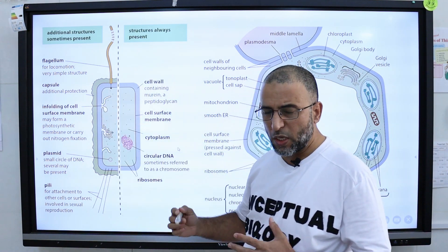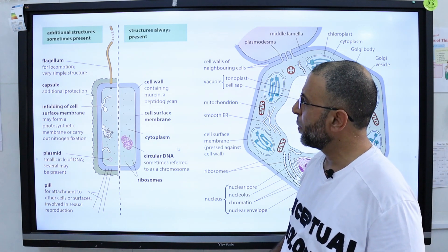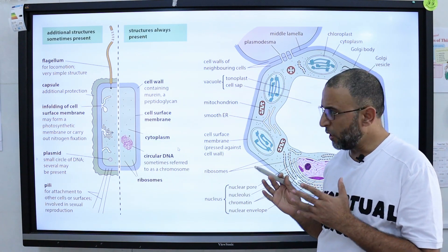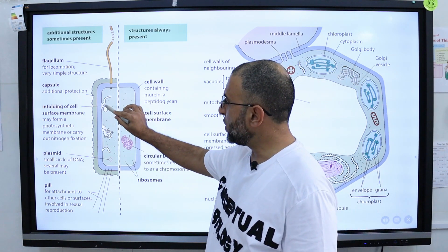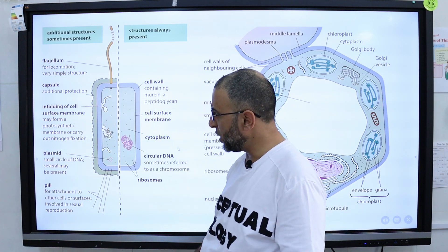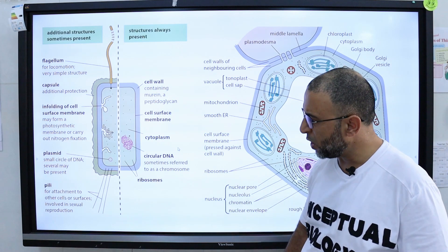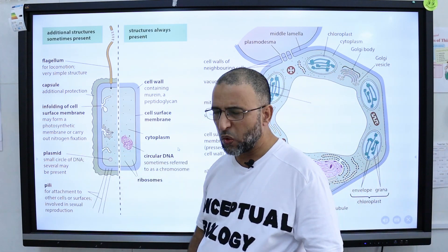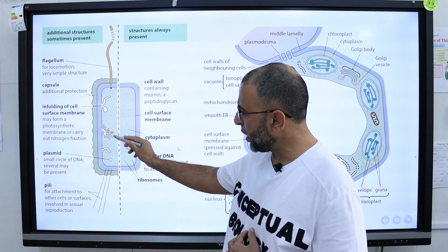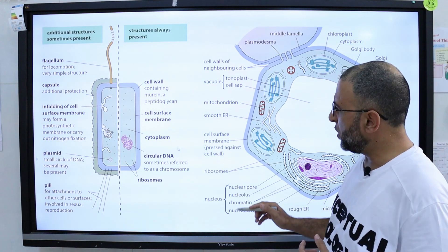Additional structures sometimes present in prokaryotic cells include a flagellum, used for locomotion. In some bacteria, a capsule is present outside the cell wall for additional protection. Sometimes the cell membrane is infolded, and these infoldings are used in photosynthesis as well as nitrogen fixation. Extra chromosomal rings called plasmids are present in the cytoplasm. Some bacteria also have structures called pili, used for attachment to other cells and involved in sexual reproduction.